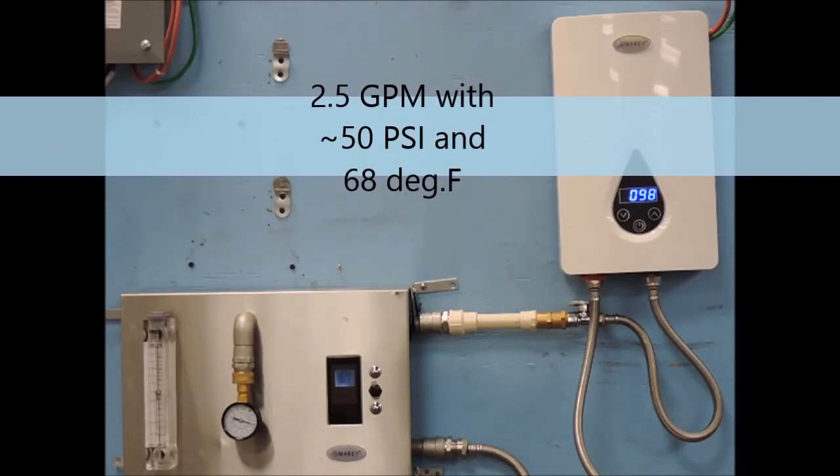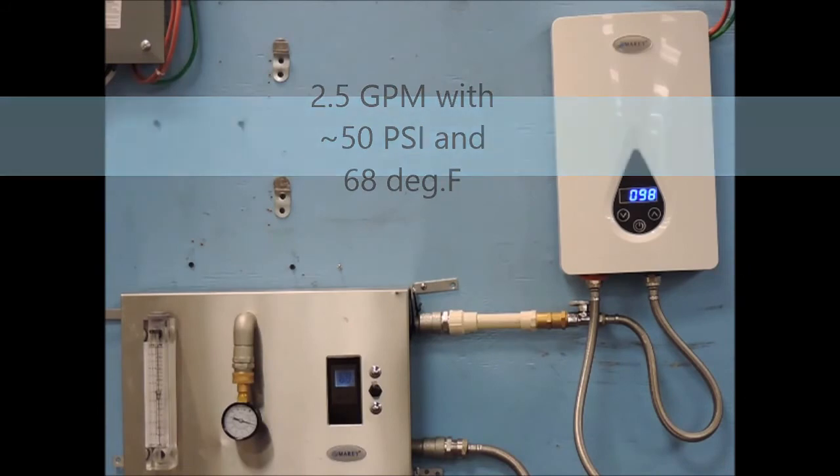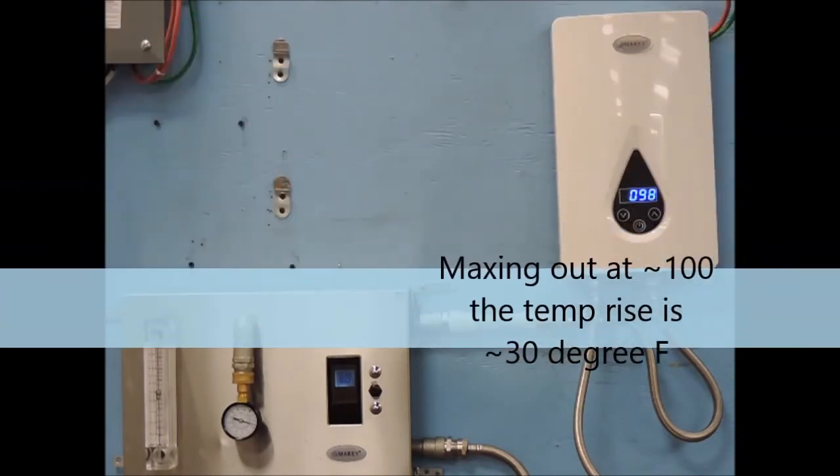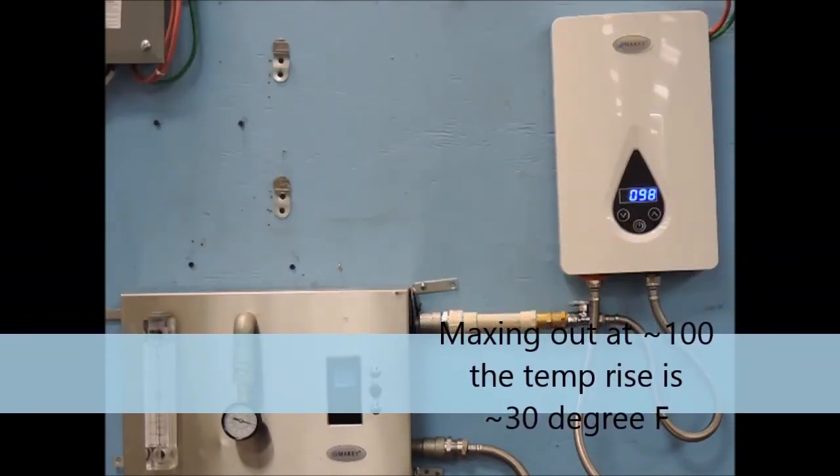In the first test, we have a 2.5 gallons per minute flow rate at 50 psi with an incoming water temperature of around 68 degrees. With these input parameters, you can see that our outgoing water temperature is 98 degrees or a 30 degree rise.